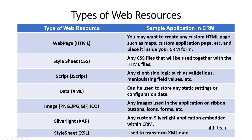The fourth type is data XML, which is used to store any static settings or configuration data. The fifth type is image — any images used in the application on ribbon button icons, forms, etc. The sixth type is Silverlight, for any custom Silverlight application embedded within CRM. And the last type is style sheet for XSLT, used to transform XML data.